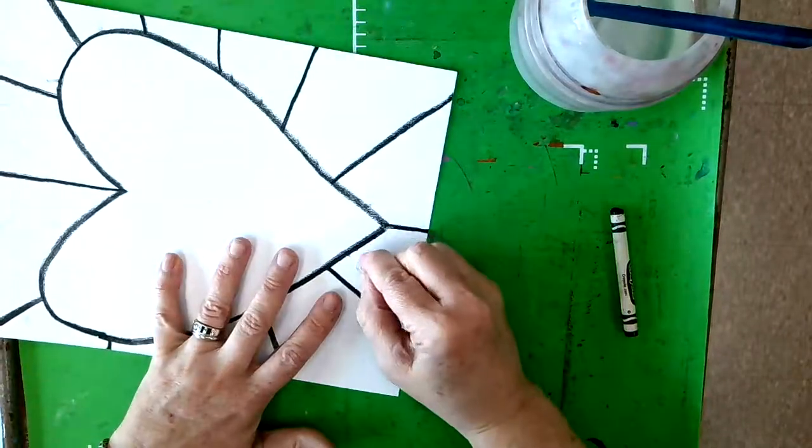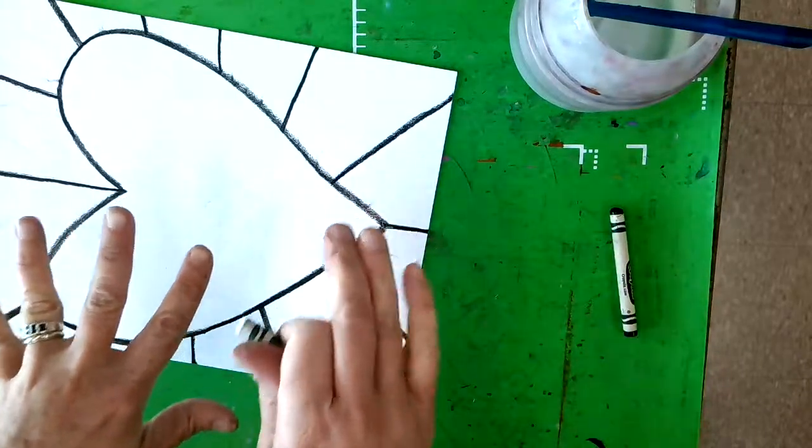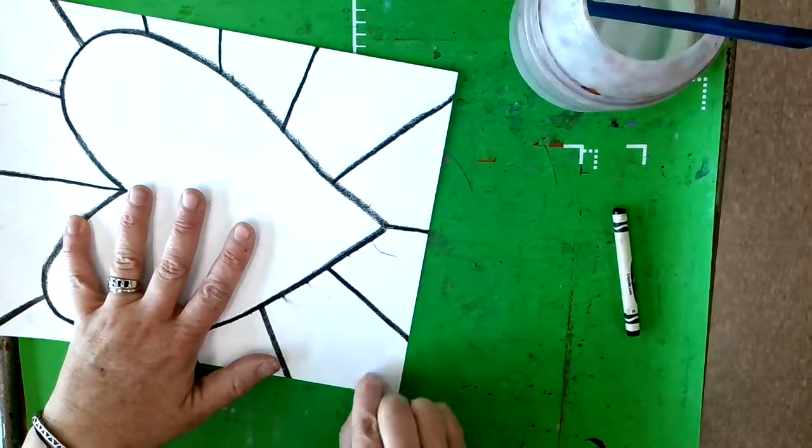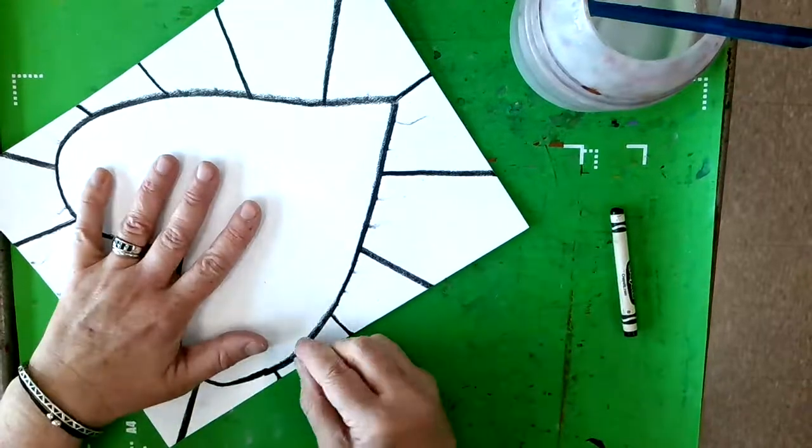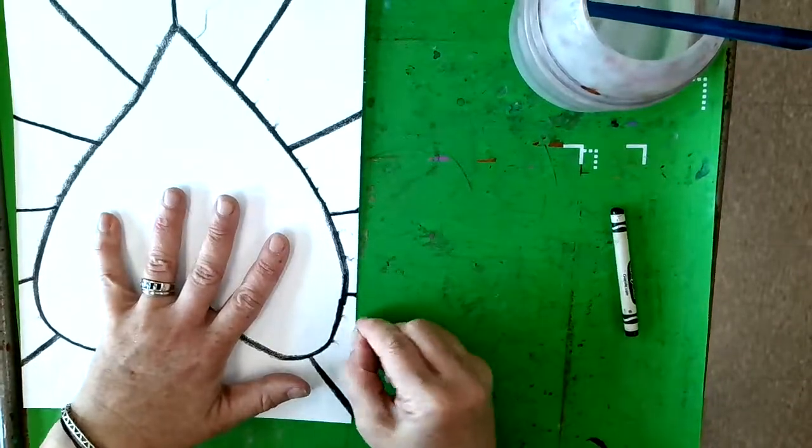One thing that's important about this, if it's going to work right, if you're going to get that wax resist technique to really work, you have to press hard with the white crayon. So make sure you're pressing hard and really bearing down with the white crayon so that it shows up when we paint over it.